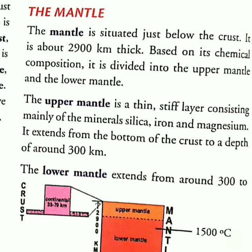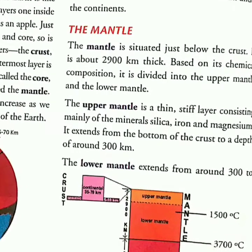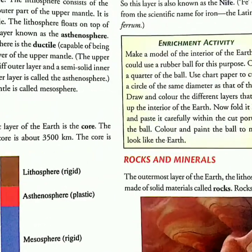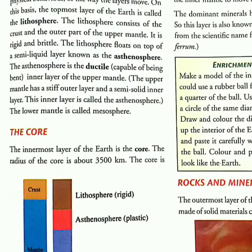The mantle is approximately 2900 kilometers thick. It is further divided into two layers: the upper mantle and the lower mantle. The upper mantle is a thin, stiff layer mainly made up of minerals silica, iron, and magnesium. From the bottom of the crust, it has a depth of around 300 kilometers. The lower mantle extends from around 300 kilometers to 2900 kilometers, and the temperature here is very high.